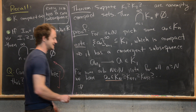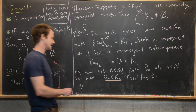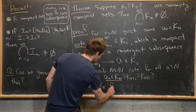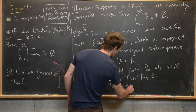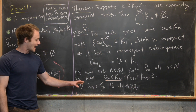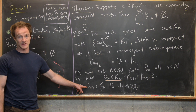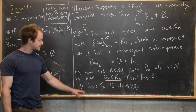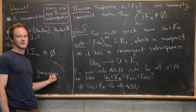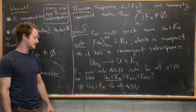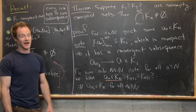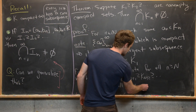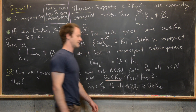What that tells us is that the tail of the subsequence is also inside K_N. In other words, a_{n_k} is in K_N for all n_k greater than or equal to N. We can view the tail of this subsequence as a convergent sequence in its own right that converges to a. We've only removed finitely many terms, so it still converges to a. But then the fact that K_N is closed means it contains all of its limit points, which means it contains a.